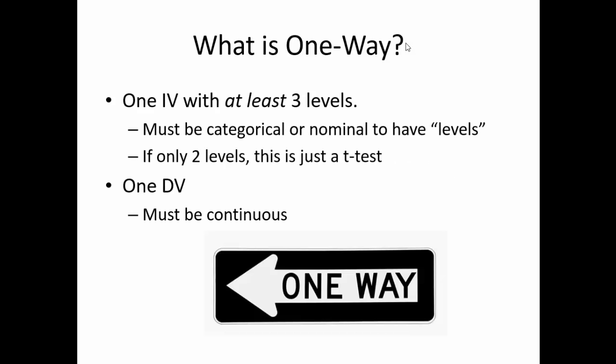Today we will be discussing ANOVAs, specifically the most simple form of ANOVA, a one-way between subjects ANOVA. A one-way ANOVA implies that there is only one independent variable, or a variable that we are manipulating, followed by one dependent variable. Furthermore, this independent variable has at least three levels.